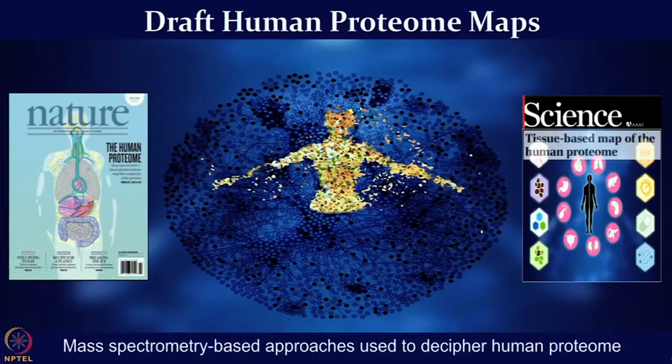Additionally, another group worked on antibody-based approaches and first showed in 2015 — in a study published in Science — a tissue-based map of the human proteome. For the first time, they showed where proteins are localized, providing evidence that proteins not only exist but how they are localized. They also provided evidence at the tissue level using immunohistochemistry and tissue array-based approaches.